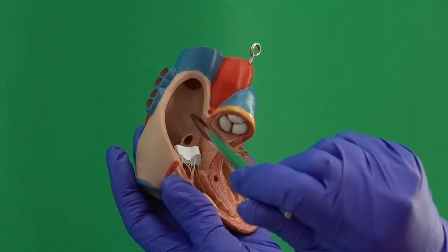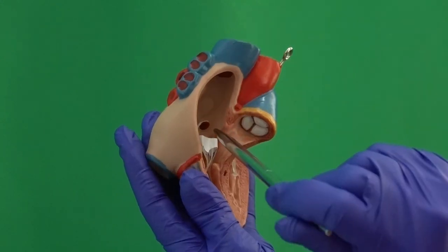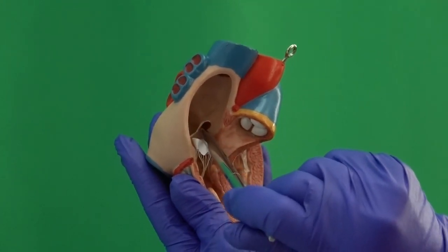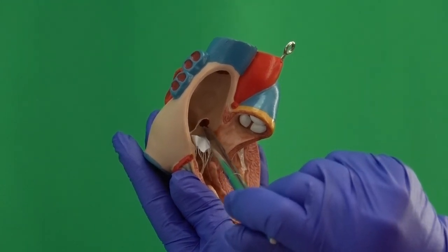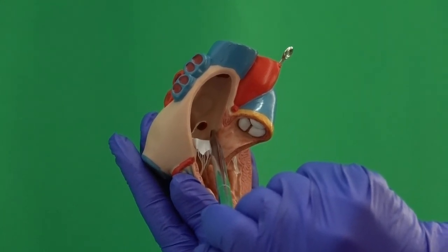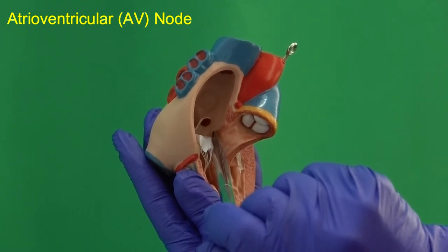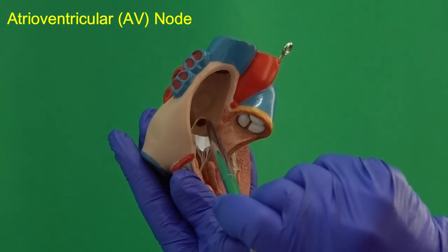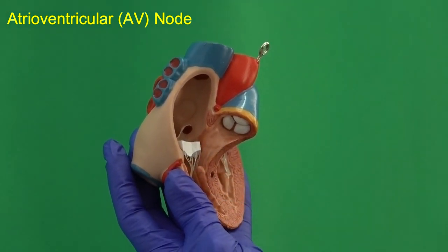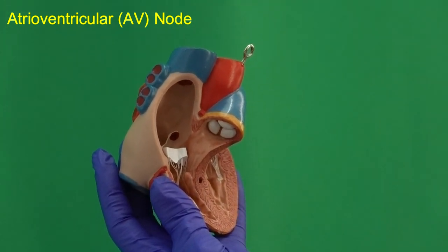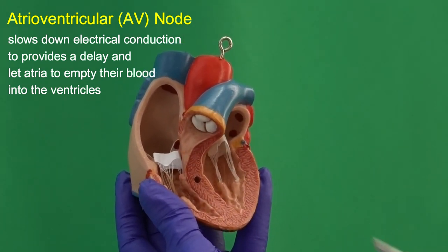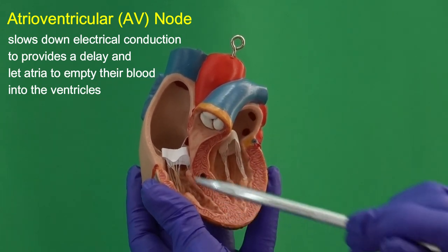The next group of auto-rhythmic fibers is located in the interatrial septum, just in front of the opening of the coronary sinus — this is the atrioventricular node, or AV node. The structure of the cells in the AV node differs from those in the SA node, and that structural difference creates a delay in letting electricity pass through. This delay gives the atria enough time to empty their blood into the ventricles before ventricular contraction begins.